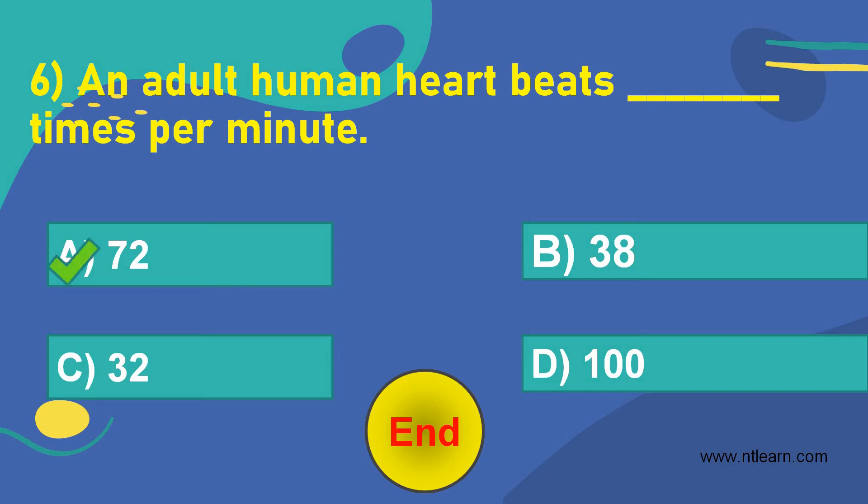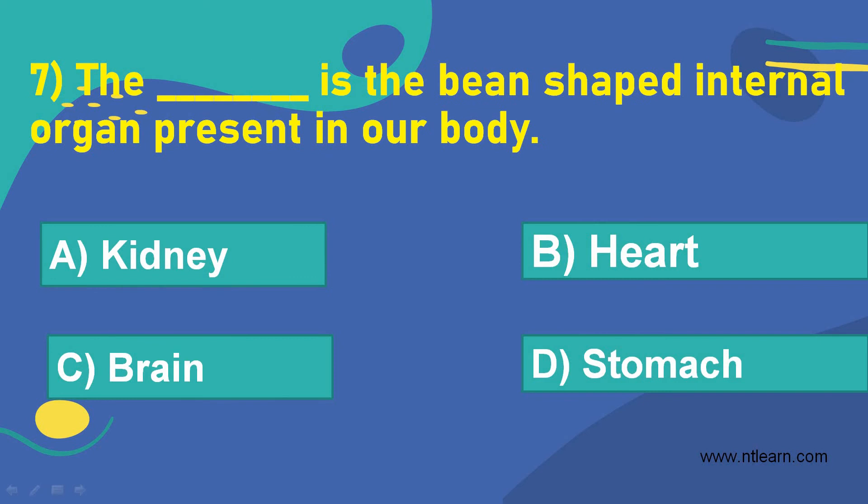Let's move on to the next question. The dash is the bean-shaped internal organ present in our body. Option A, kidney. Option B, heart. Option C, brain. Option D, stomach.